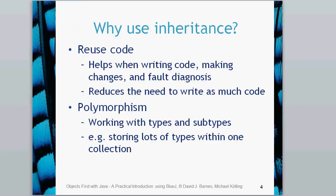Let's do a little bit of revision. Why do we use inheritance? There are two main reasons. The main one is the reuse of code — we don't have to keep writing the same methods and fields for very similar types. We can write one generic type and have lots of subclasses beneath it that are similar to the superclass but have their own specifics, giving us a nice hierarchy.